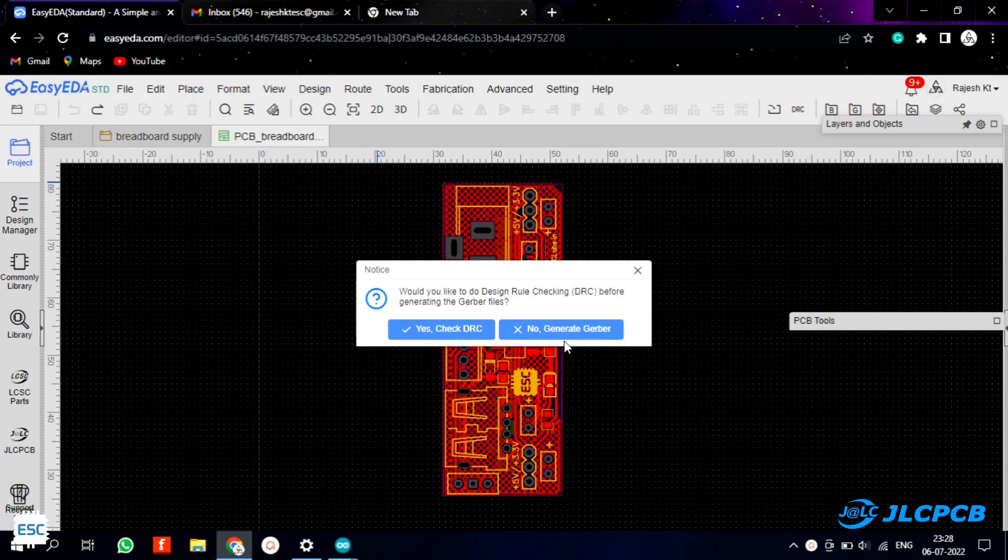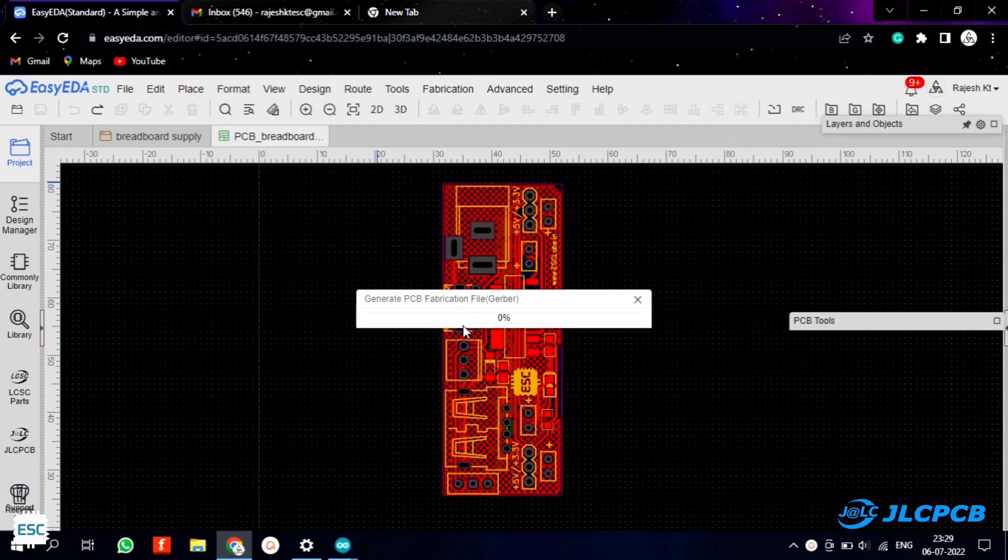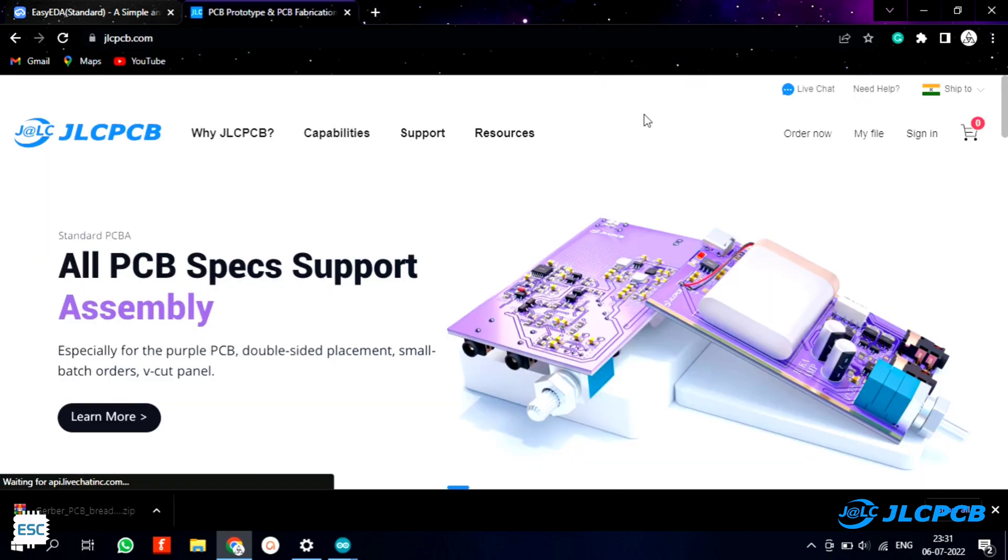After that I generated and downloaded the Gerber file for PCB fabrication. To fabricate PCBs I went to JLCPCB.com. I chose JLCPCB because their PCB quality is awesome and you will get 5 PCBs for just $2.